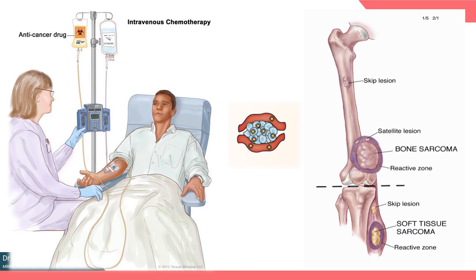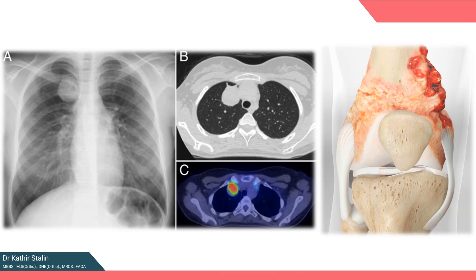Chemotherapy is administered before surgery — known as neoadjuvant chemotherapy — for a period of 8 to 12 weeks. Afterwards, the tumor is surgically resected, followed by adjuvant chemotherapy. It plays a crucial role in eliminating micrometastasis and sterilizing the reactive zone surrounding the tumor. The lung and then the bone are the most common sites of metastasis, so diligent monitoring is warranted.